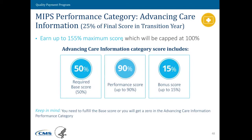The last performance category is Advancing Care Information. This got restructured so that the base score is worth 50% of your score — if you meet that base score, you automatically get 50% credit. As you report additional measures, which change based on your certification, you can increase your score up to a maximum of 100%. In general, when you consider all the ways you can report — the base score, additional performance measures, and bonus points for reporting to additional registries or using electronic health records for improvement activities — you have the ability to get up to 155 points, with maximum credit capped at 100%.